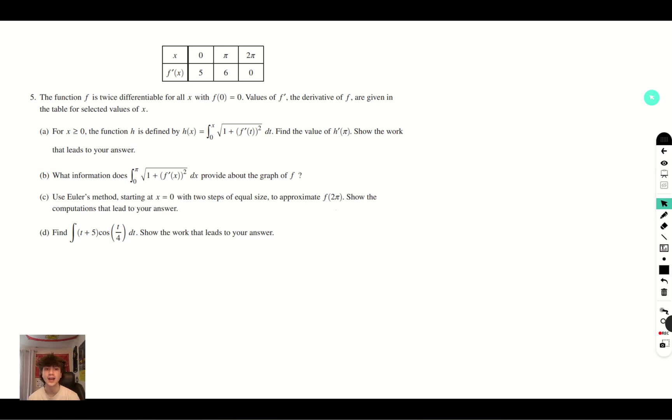For x ≥ 0, the function h is defined by h(x) equals the integral from 0 to x of √(1 + (f'(t))²) dt. Find the value of h'(π). Alright.